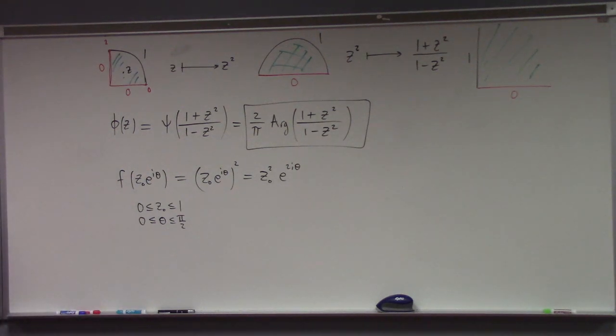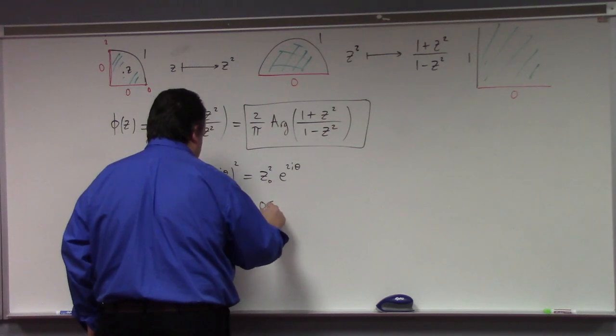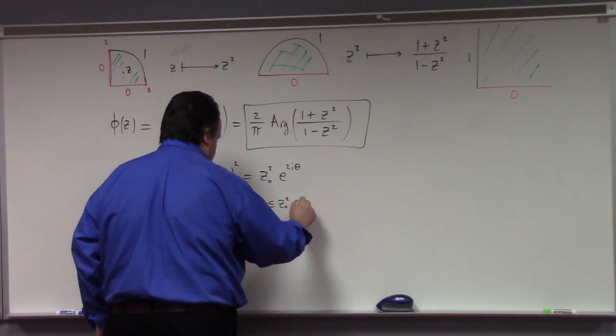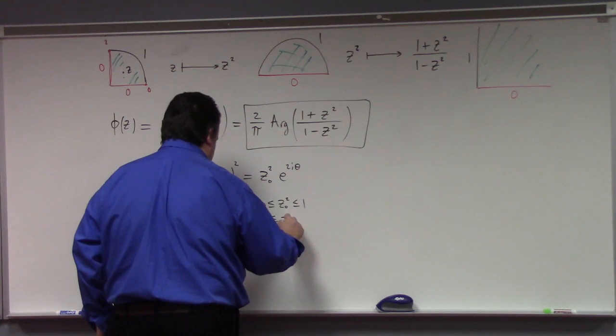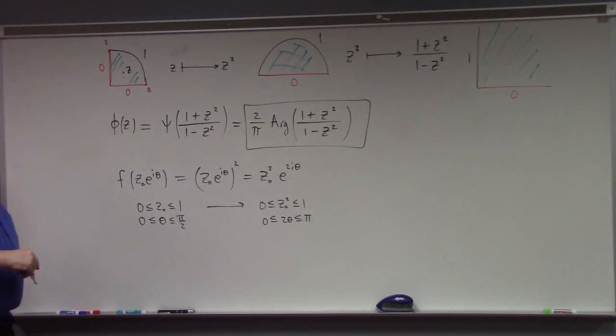Well, then what happens? You see zero less than or equal to z not squared less than or equal to one and zero less than or equal to two theta less than or equal to pi, which is the polar description of the half disk. So that's what squaring does, it doubles your sectors in terms of their angle. If we had a cube, we would have got three quarters of it, the plane, right?